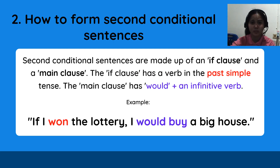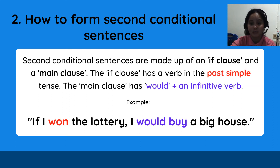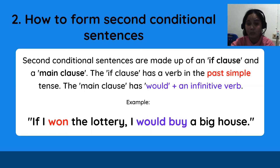How to form second conditional sentences: second conditional sentences are made up of an if-clause and a main clause. The if-clause has a verb in the past simple tense. The main clause has 'would' plus an infinitive verb. Example: if I won the lottery, I would buy a big house. So 'won' is the past simple tense, and 'would buy' is the example for the main clause — would plus an infinitive verb.